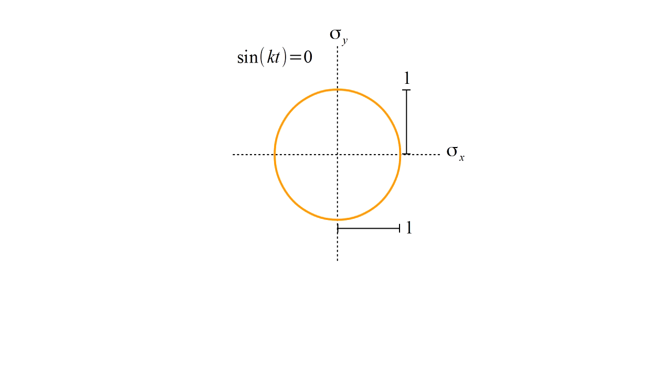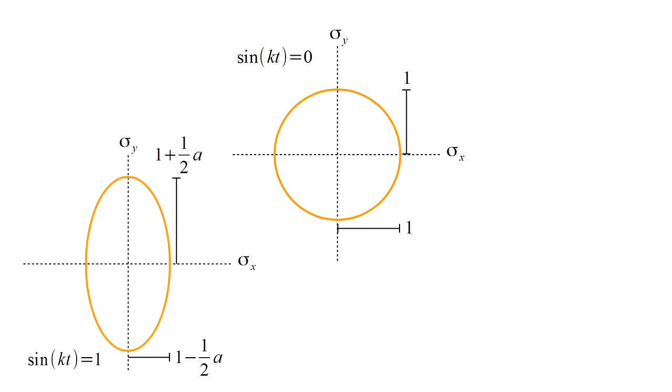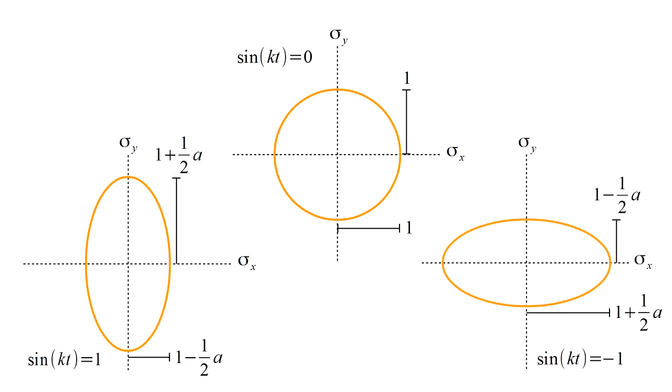Let's plot the curve x squared plus y squared equals one in terms of sigma x and sigma y. At t equals zero, sine k t equals zero, and both distances are one. The curve x squared plus y squared equals one is then a physical circle. As t increases, sine k t increases to one. At this point, sigma x equals one minus one half a, and sigma y equals one plus one half a. The curve x squared plus y squared equals one is now a physical ellipse elongated vertically. As t increases further, sine k t decreases back to zero. The sine continues decreasing until it reaches its minimum value of minus one. The curve x squared plus y squared equals one is now a physical ellipse elongated horizontally. At a later time, we again have sine k t equals zero, and we're back to a circle. The process repeats as long as the gravitational wave is present.